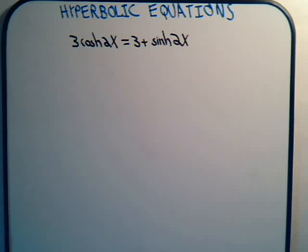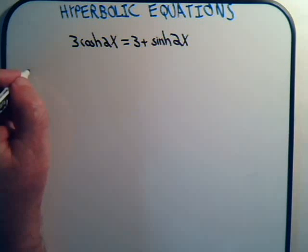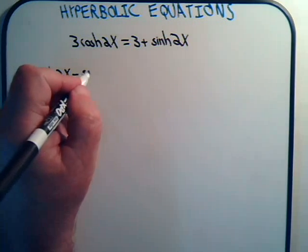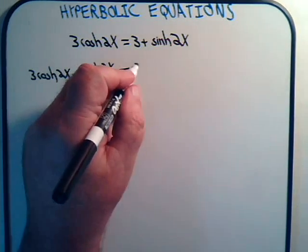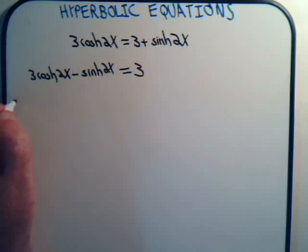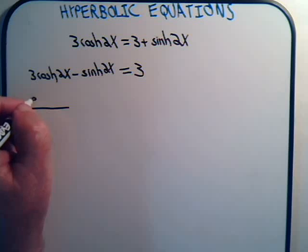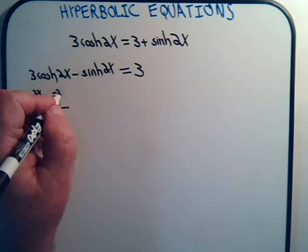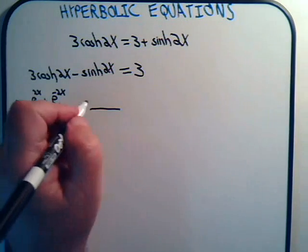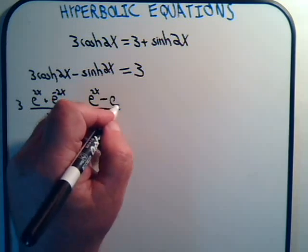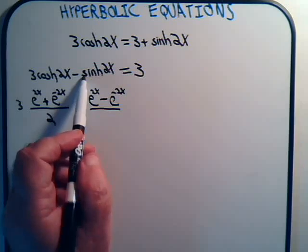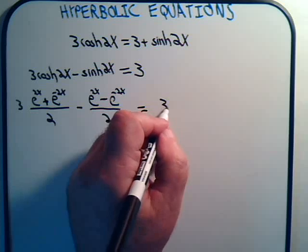To begin, let's get all the hyperbolic functions on one side: 3 times the hyperbolic cosine of 2x minus the hyperbolic sine of 2x equals 3. Putting things into their basic definitions, this is 3 times (e^(2x) + e^(-2x))/2 minus (e^(2x) - e^(-2x))/2 equals 3. With hyperbolic cosine we add the exponentials; with hyperbolic sine we subtract.